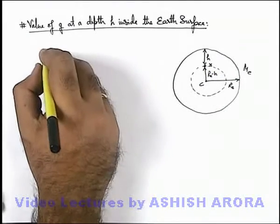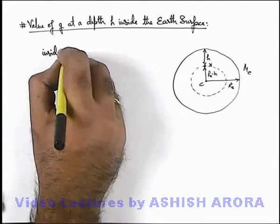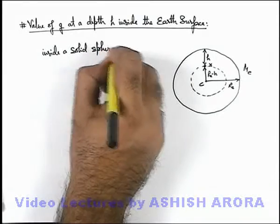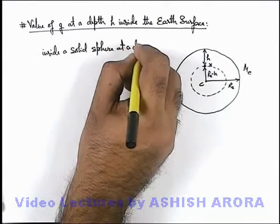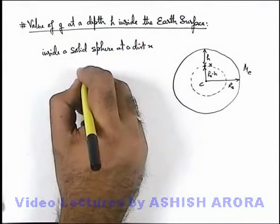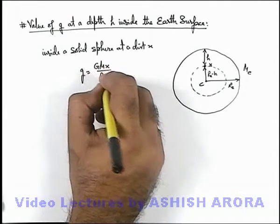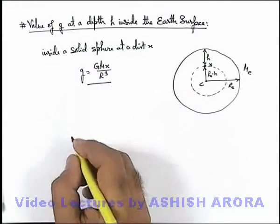Then we can directly write, inside a solid sphere, at a distance x, the value of g is given as GMx by R³ which we have already calculated in the previous section.